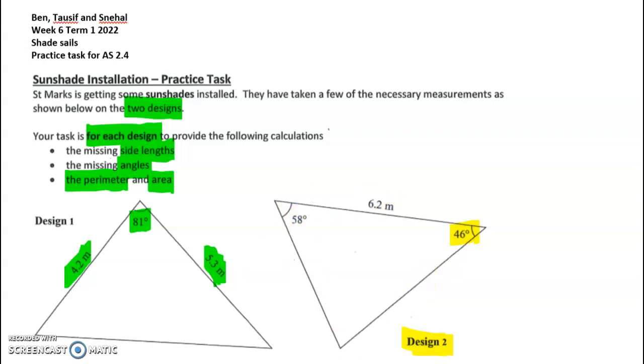What we need to do here before we start on design two is remember that angles in a triangle add up to 180 degrees, and that's going to let me find this angle here and then we can go from there. So that's the first part.